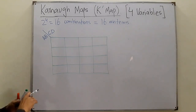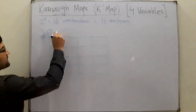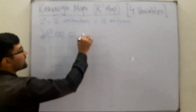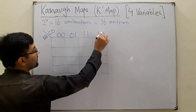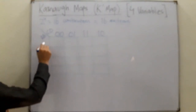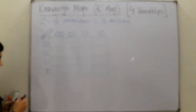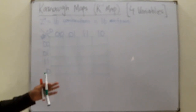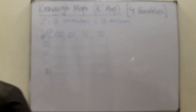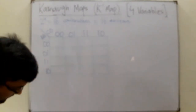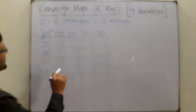The combinations we use are: 00, 01, 11, 10 — following Gray code order so that only one variable changes at a time. On the C and D side we similarly have 00, 01, 11, 10.